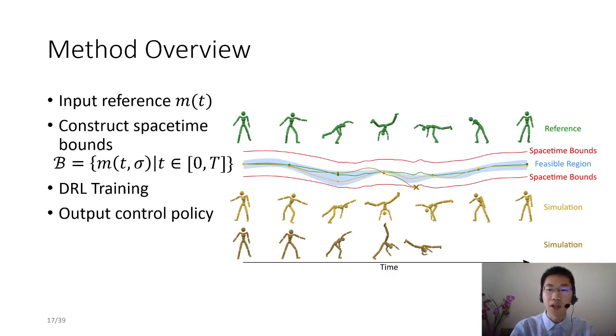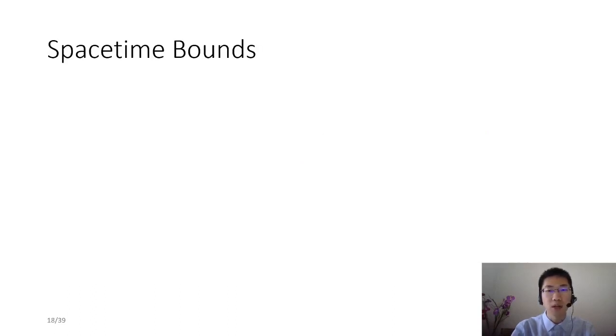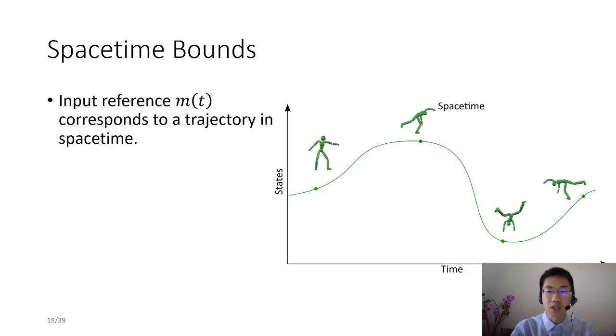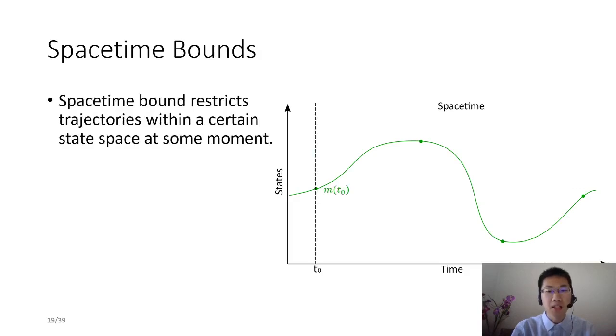Following, I will detail how to construct spacetime bounds and how to do DRL training. As we all know, every character animation sequence corresponds to a trajectory in spacetime. Here we show the trajectory of input reference mt.